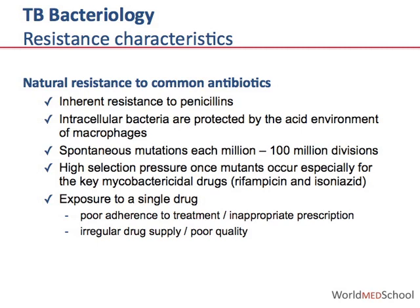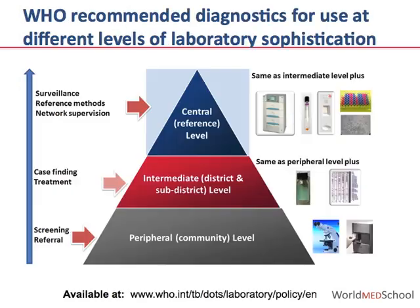There is high selection pressure once mutants do occur, and this is especially important for the key mycobacterial drugs rifampicin and isoniazid. Tuberculosis is treated with multiple drugs, but exposure to a single drug — through poor adherence to treatment, inappropriate prescription, inadequate drug supply, or poor quality of drugs — can contribute to the development of drug resistance.